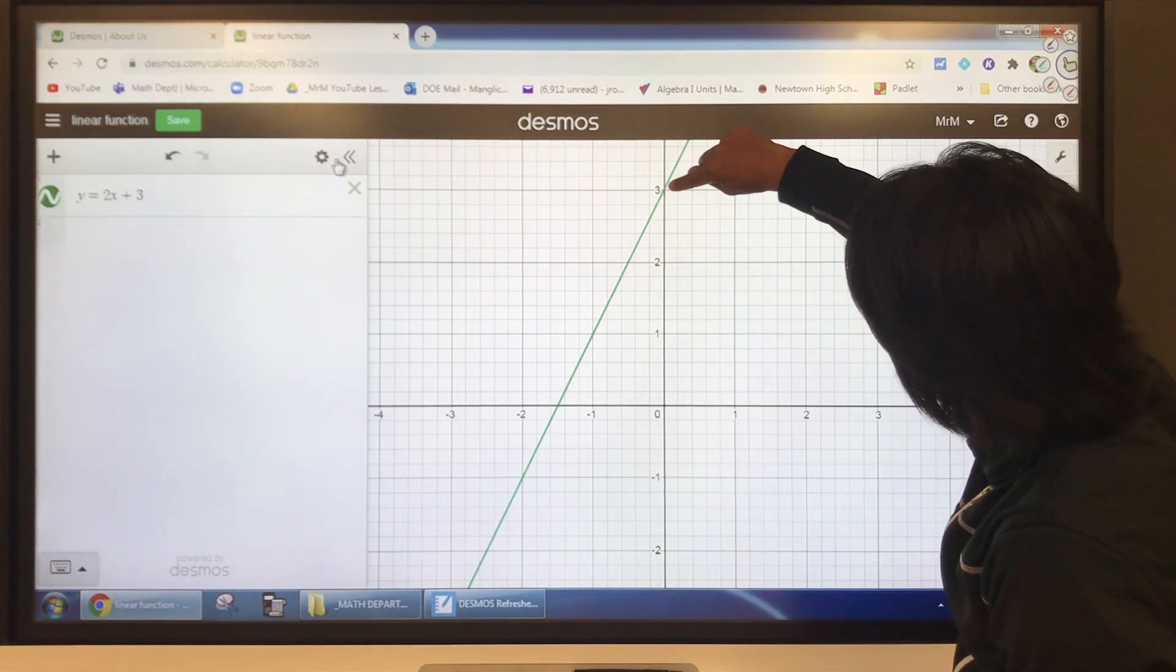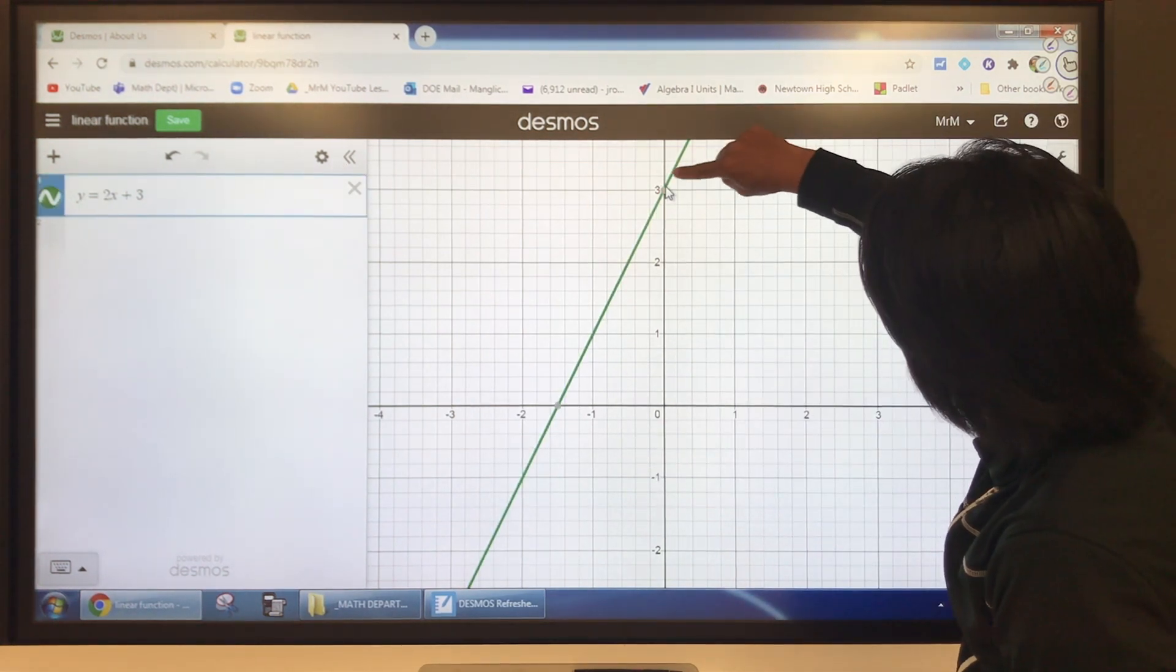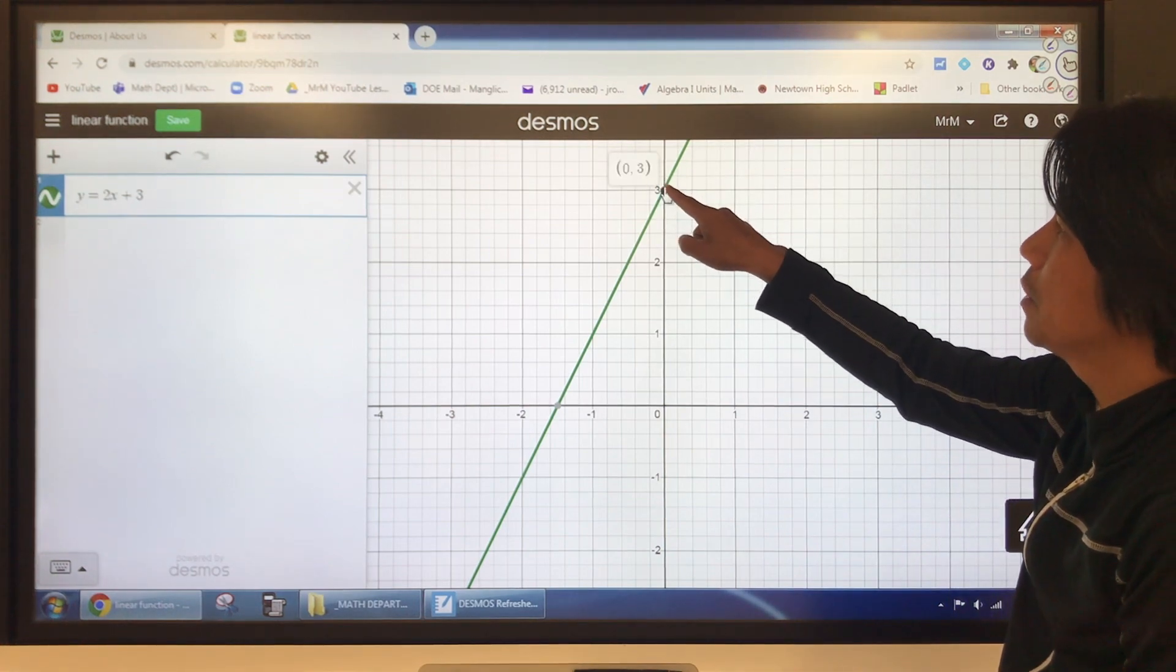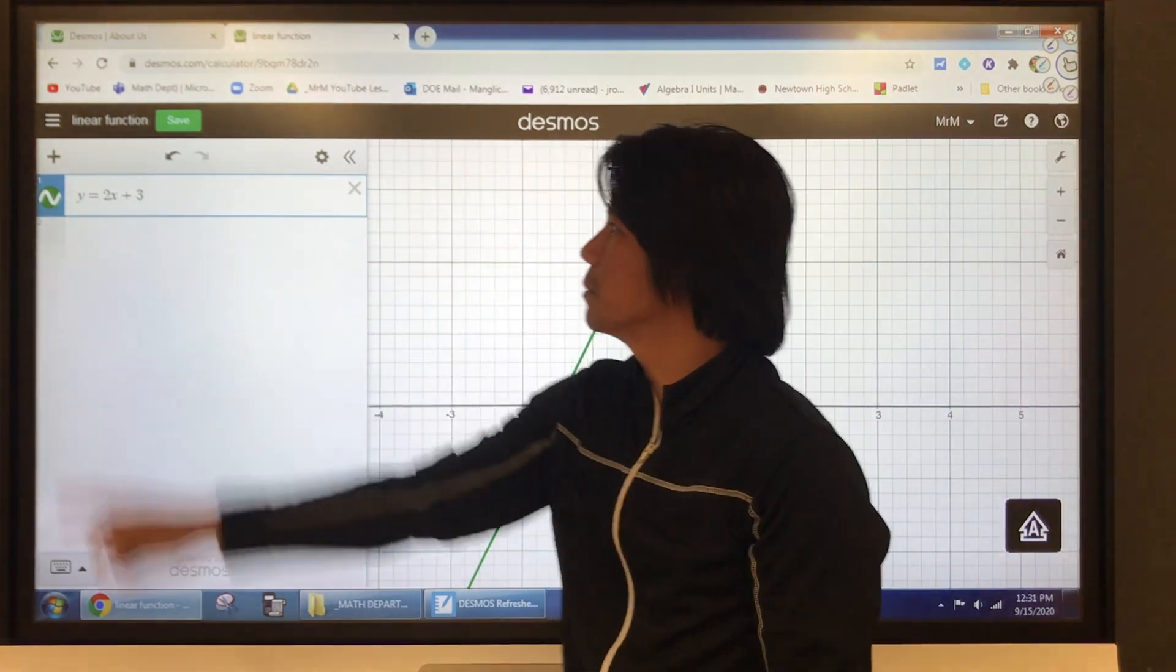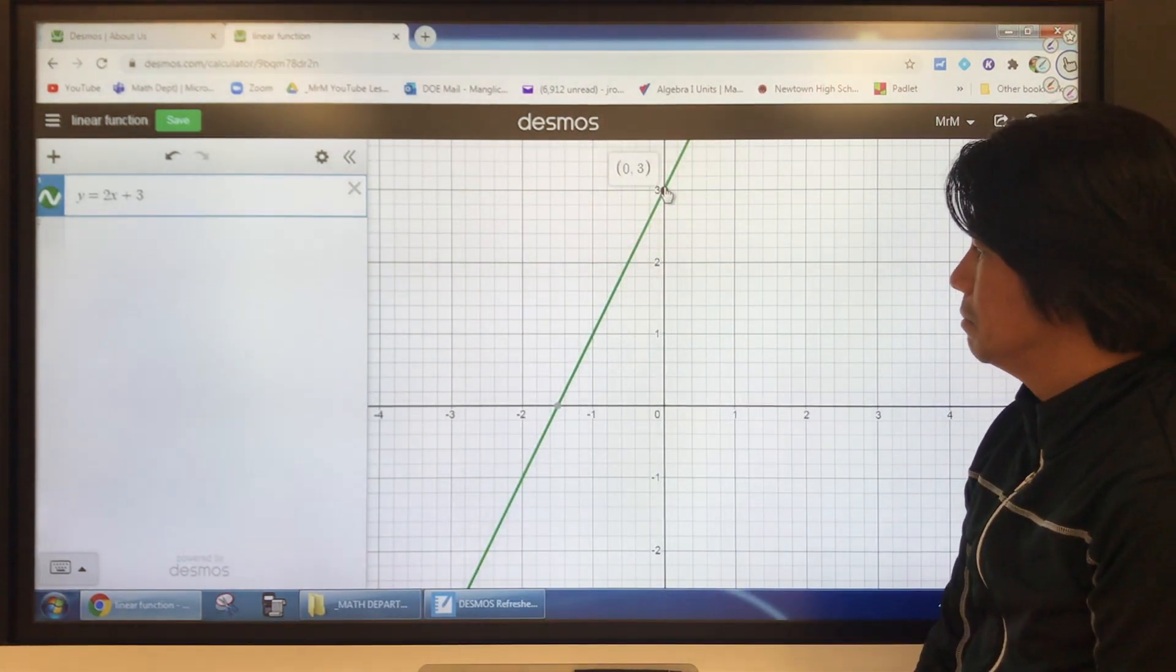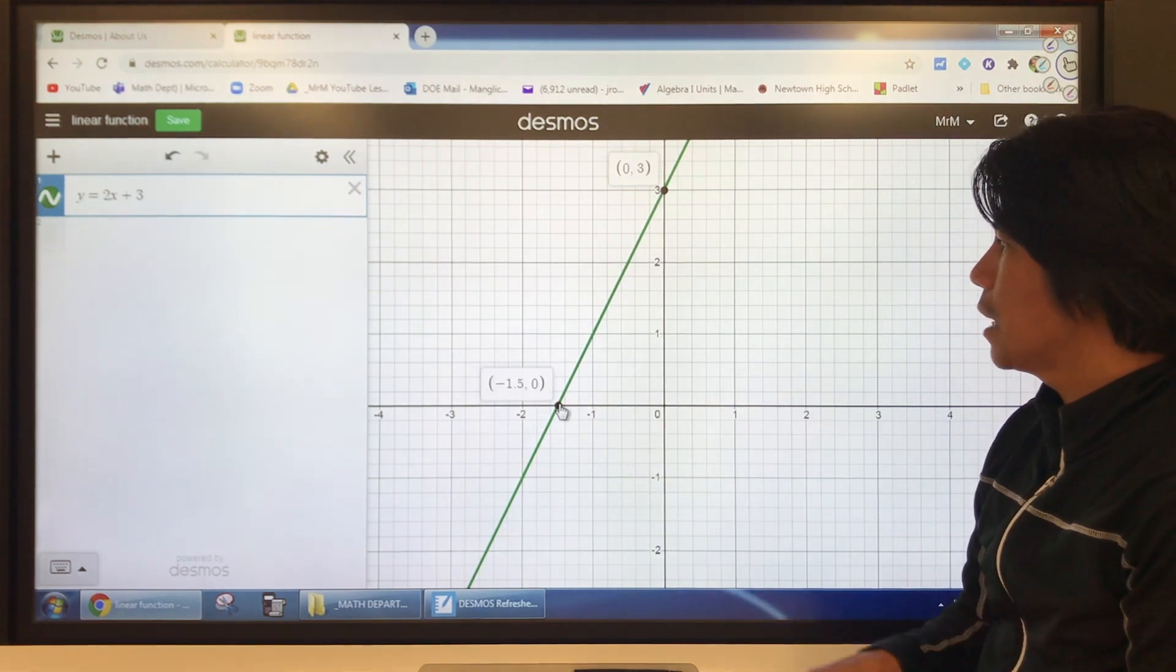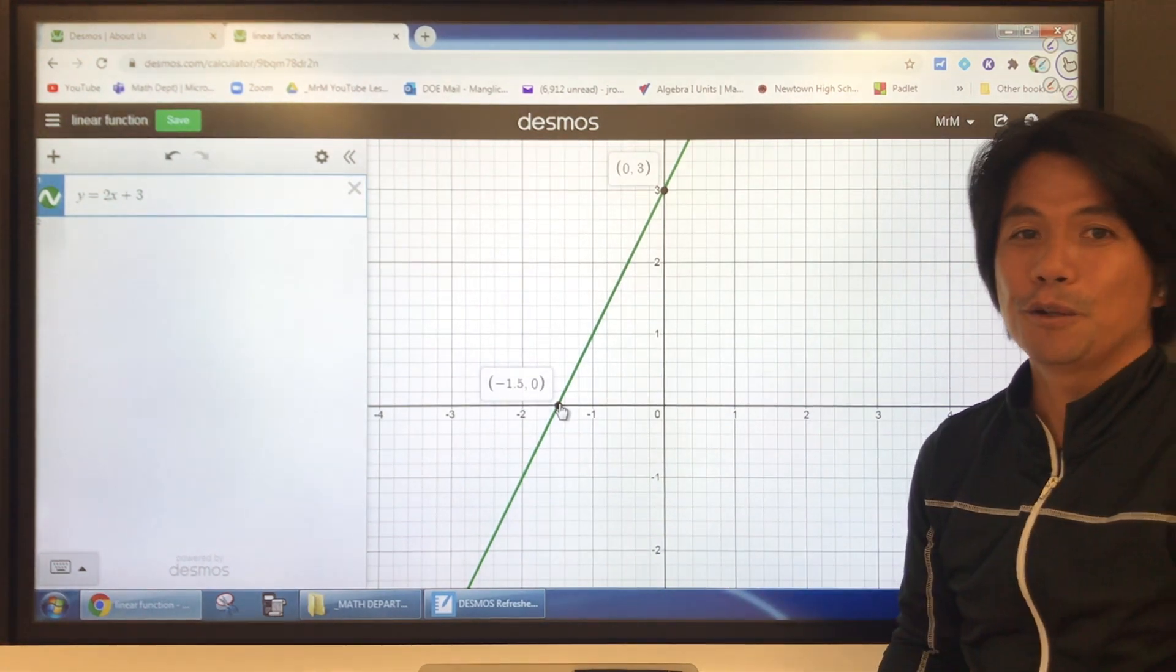If I'm going to click a point right here, it gives me the coordinate of that point: 0, 3, which is the y-intercept. Obviously, that's the y-intercept there or the value of B, and the x-intercept, negative 1.5 comma 0. It's cool, isn't it?